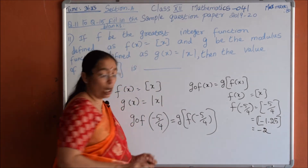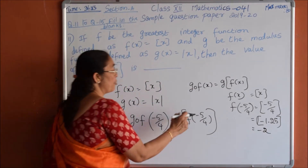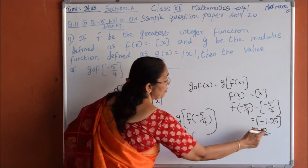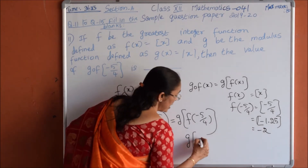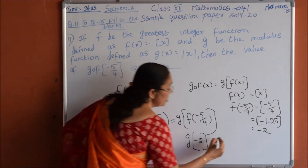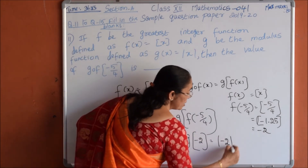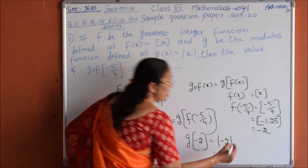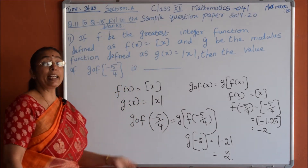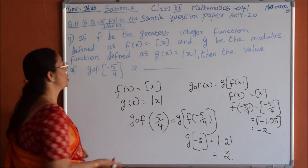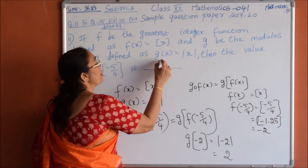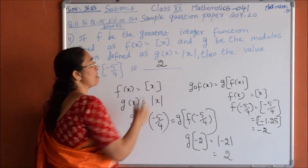So f(-5/4) = minus 2. Now applying g: g(f(-5/4)) = g(-2) = |-2| = 2, since the modulus of any negative value is positive. Therefore, g composition f of minus 5 by 4 is 2.